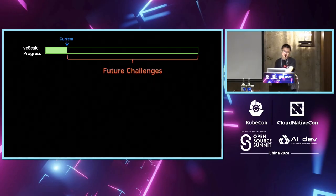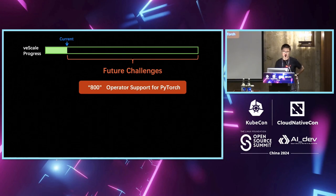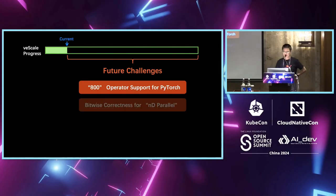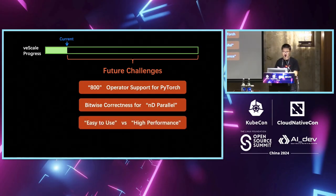We foresee several challenges in the future. First, there is a lot of operator support work to do — in PyTorch, there are over 800 operators that we need to support and make run correctly with D-tensor. We also have to ensure all our business models achieve bitwise correctness, which is a lot of effort. And there are many trade-offs between ease of use and performance that we will need to address.